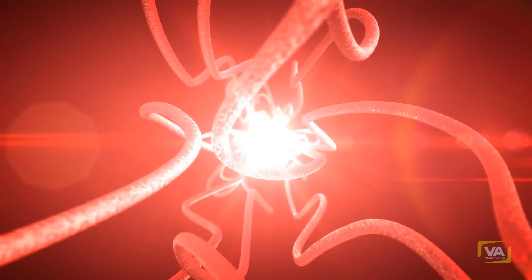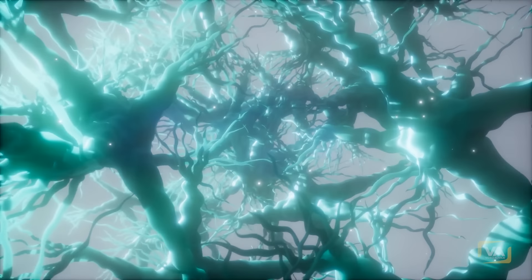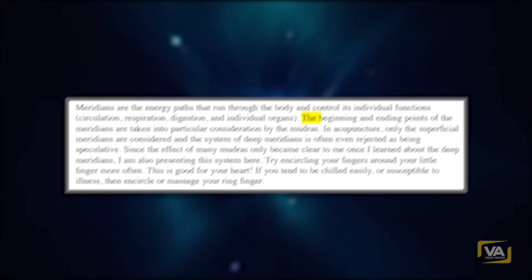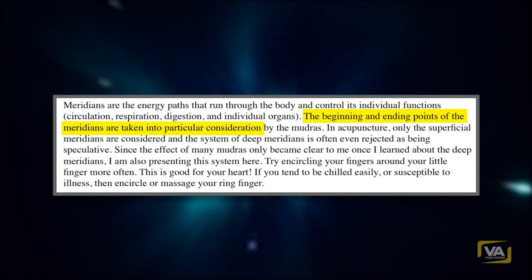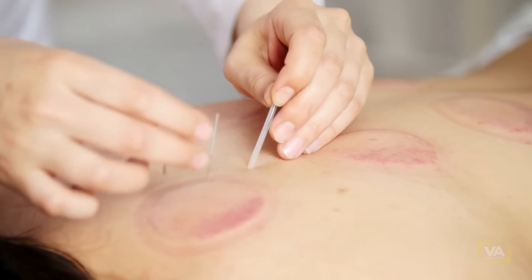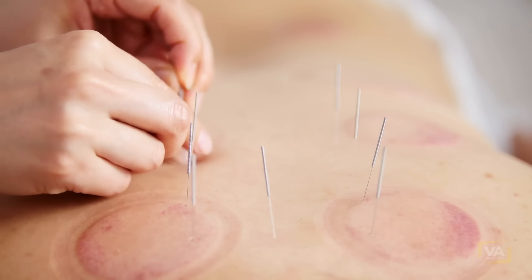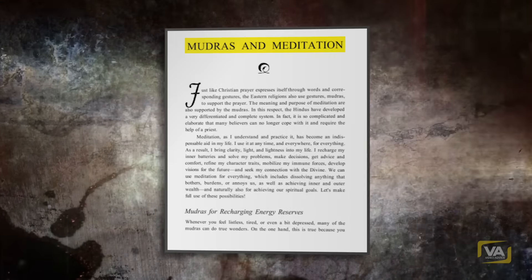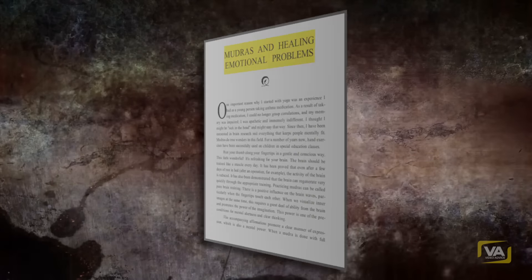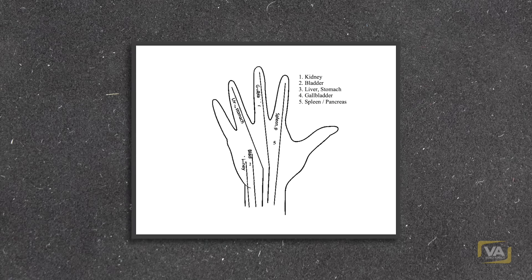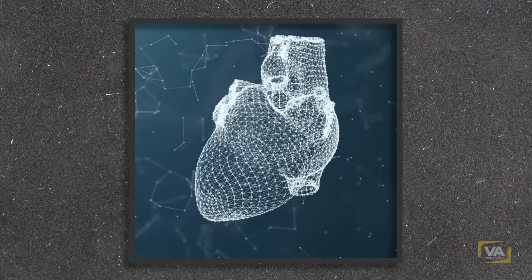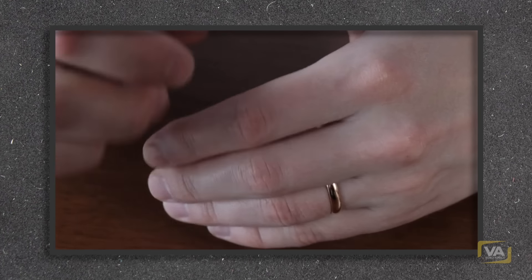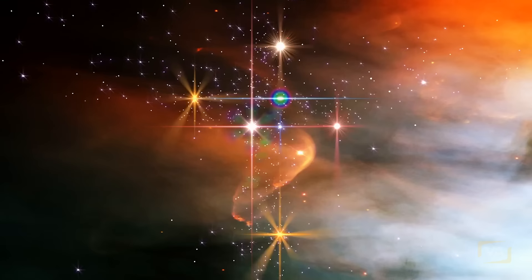Meridians and Deep Meridians: Meridians are the energy paths that run through the body and control its individual functions — circulation, respiration, digestion, and individual organs. The beginning and ending points of the meridians are taken into particular consideration by the mudras. In acupuncture, only the superficial meridians are considered, and the system of deep meridians is often even rejected as being speculative. Since the effect of many mudras only became clear once I learned about the deep meridians, I am also presenting this system here. Try encircling your finger around your little finger more often — this is good for your heart. If you tend to be chilled easily or susceptible to illness, then encircle or massage your ring finger.